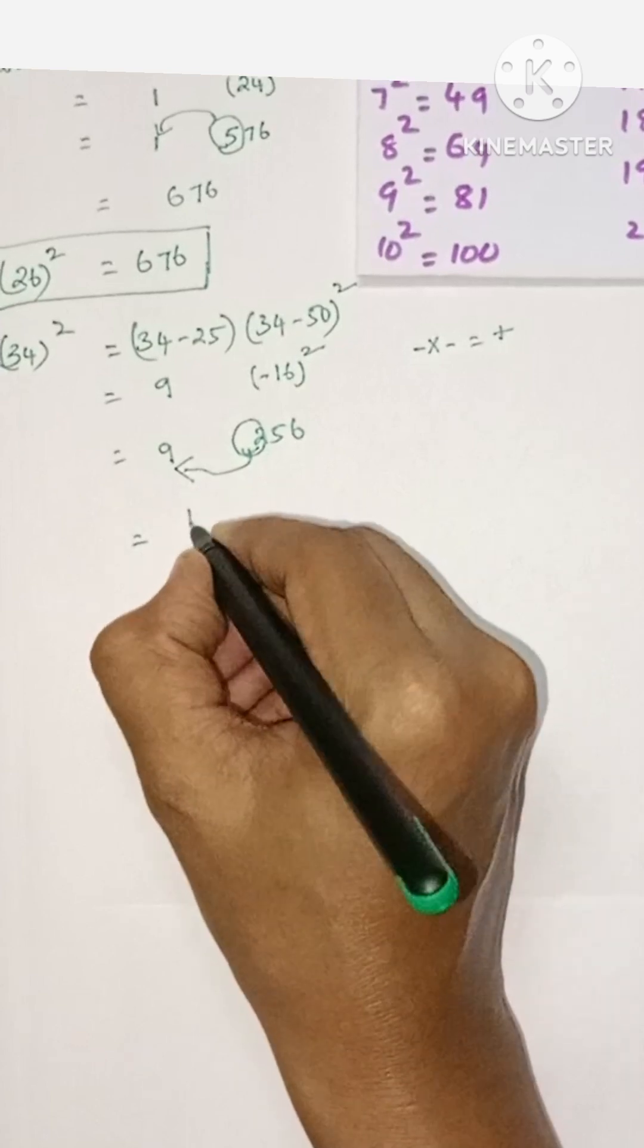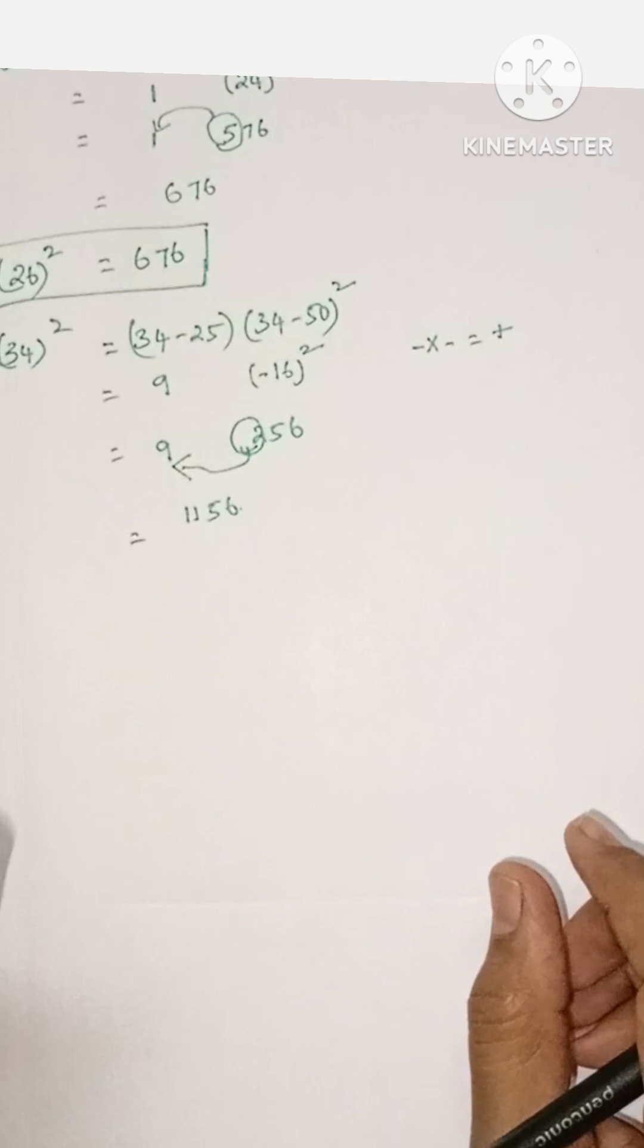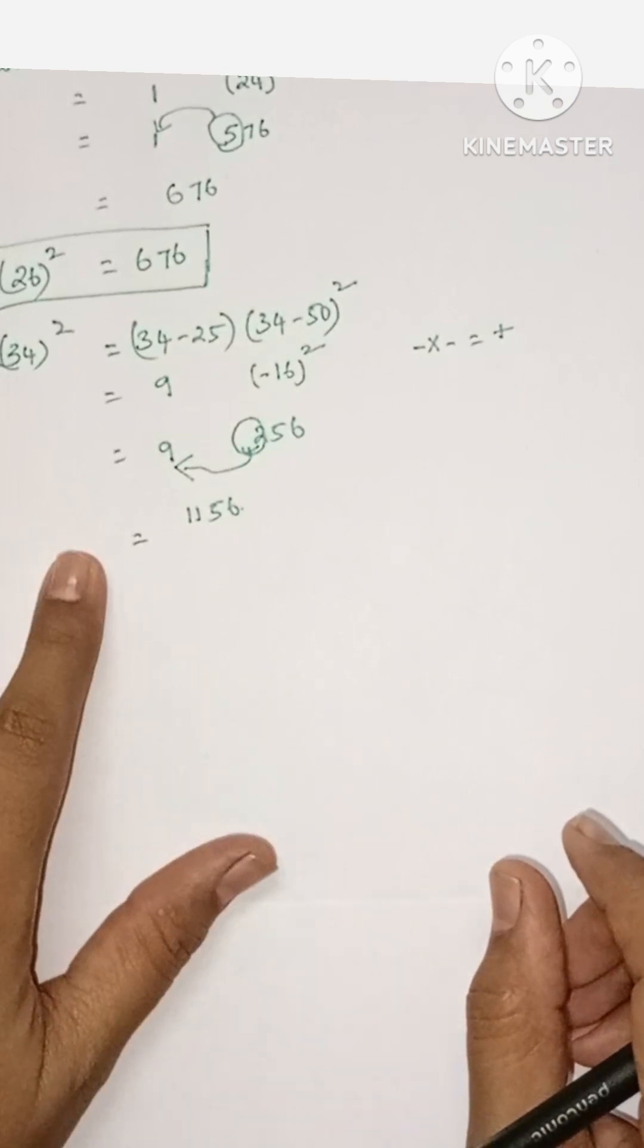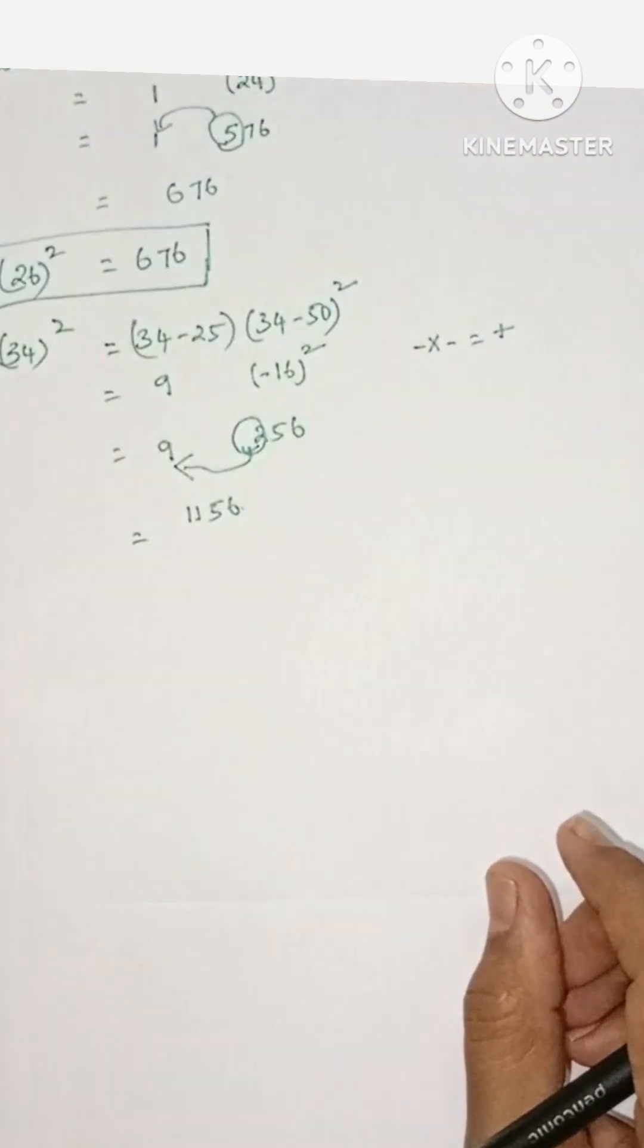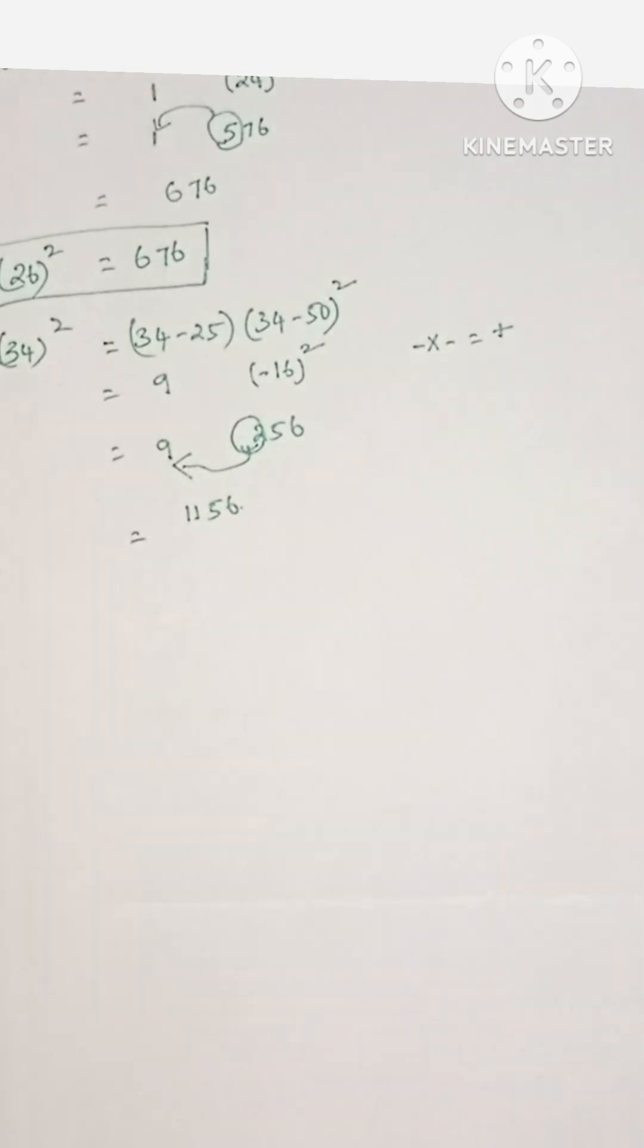9 plus 2 is 11, so 1156. Students, clearly you can find the square of a number from 25 to 75 in this method. We will see the last example also.